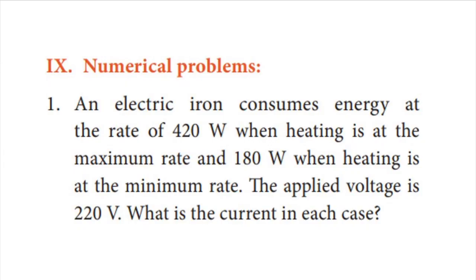Students, numerical problem 1. An electric iron consumes energy at the rate of 420 watts when heating is at the maximum rate, and 180 watts when heating is at the minimum rate. The applied voltage is 220 volts. What is the current in each case?